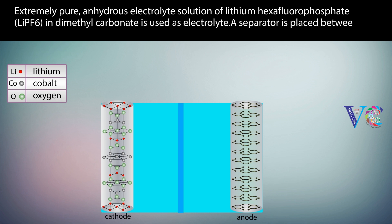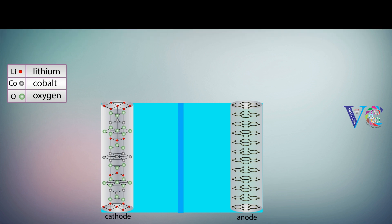A separator is placed between the two electrodes to prevent short circuit. The separator permits the movement of lithium ions only.